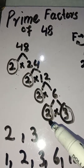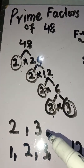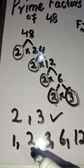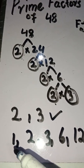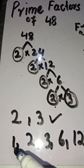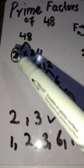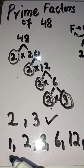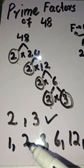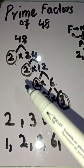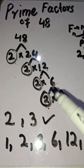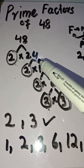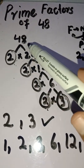So 2 and 3 are the prime factors which divide 48. Now finding all the factors of 48: 1, 2, 3, 6, 12, 24, and 48 are all the factors of 48.